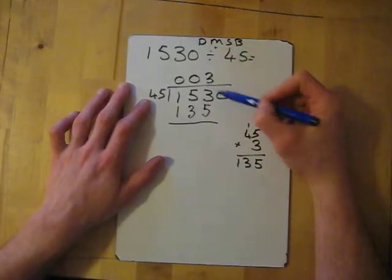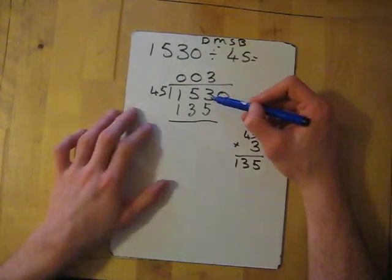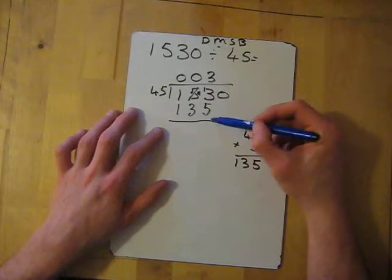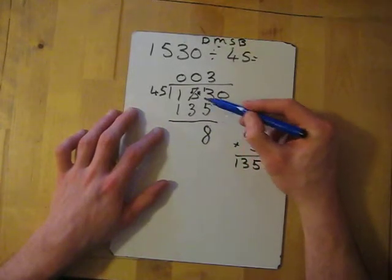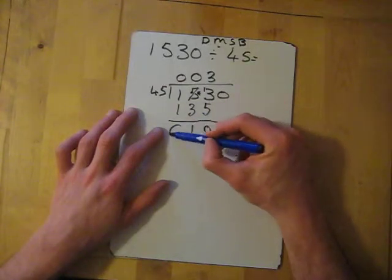Then we need to subtract - column subtraction. 3 take away 5 we cannot do, so it becomes a 4. So it's 13 take away 5 which gives me 8. Then 4 take away 3 which is 1. 1 take away 1 gives me 0.